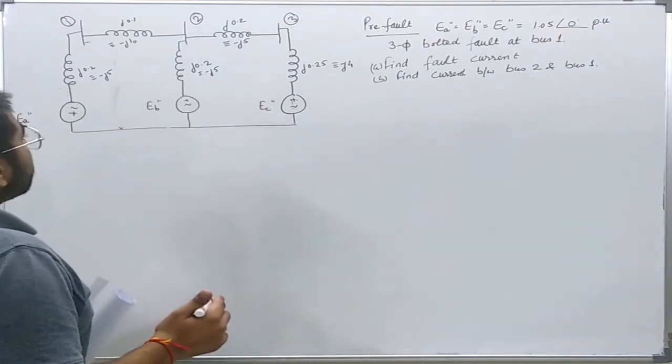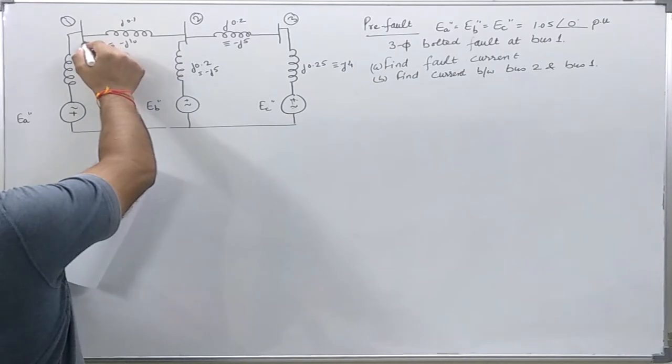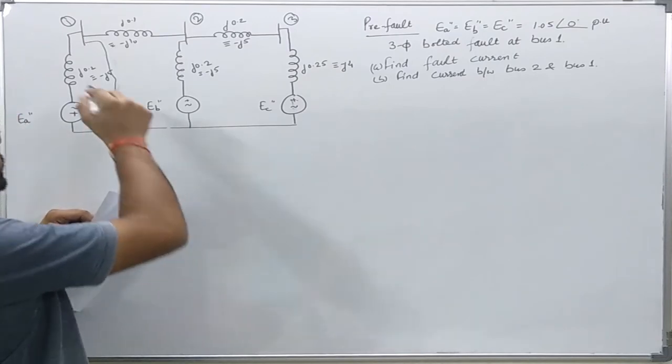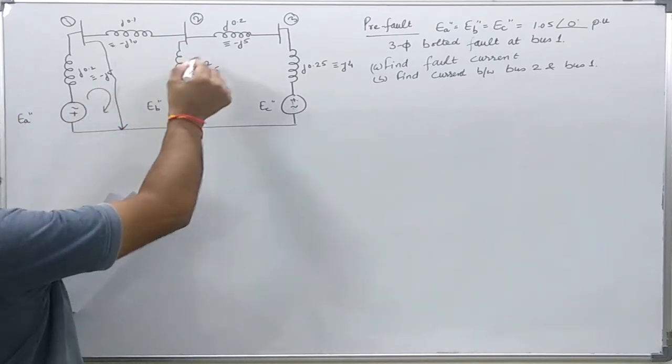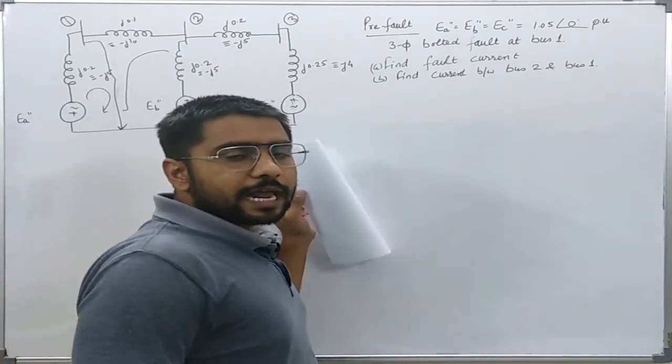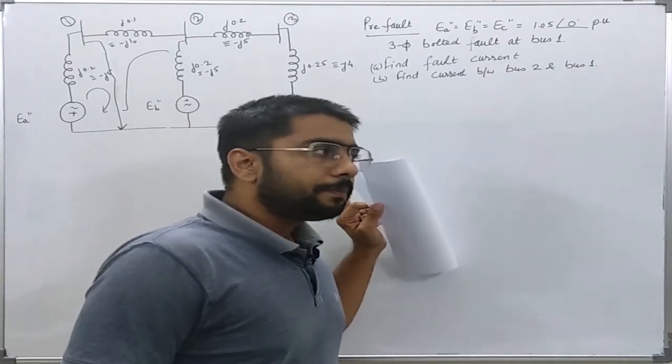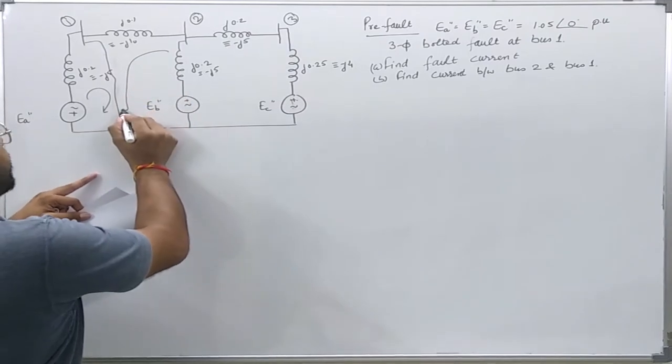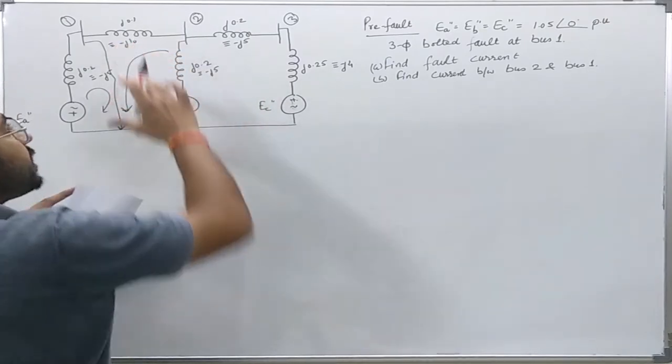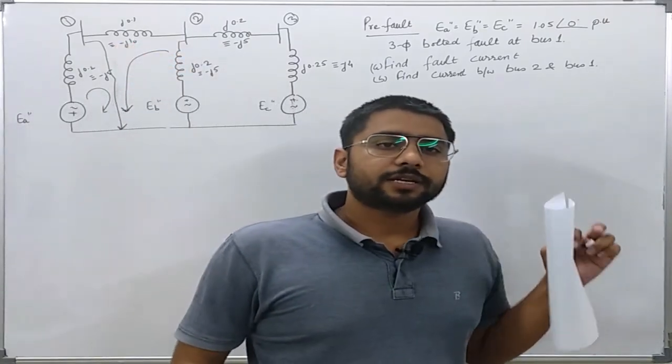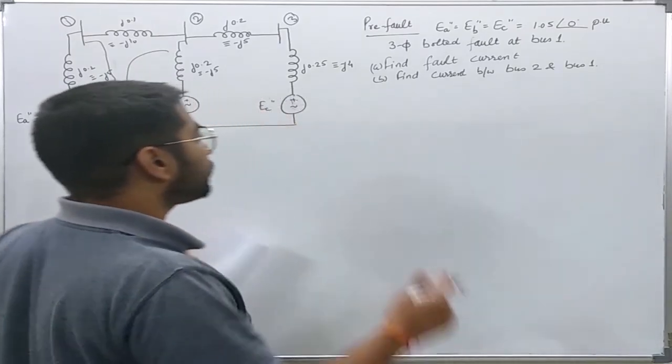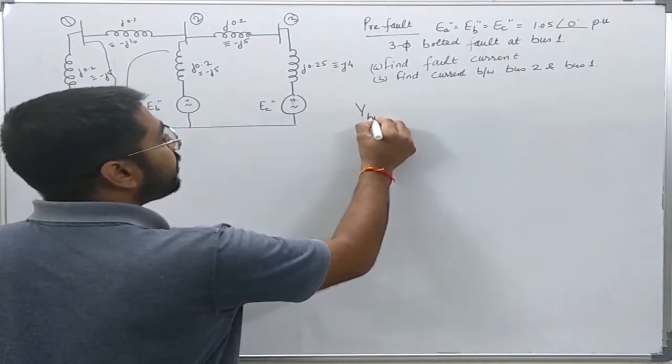When this three-phase fault occurs at bus 1, there will be a fault current first by this voltage source and second by this equivalent network on the right side. I can calculate this current easily using network theory. But for a big power system having number of buses, the calculations will increase if I use network theory. So we will try to solve it using the bus impedance matrix. First, we will find the admittance matrix. It is very easy.